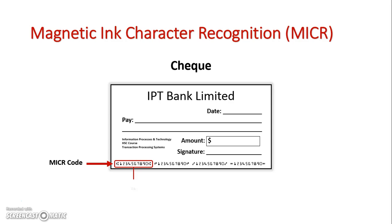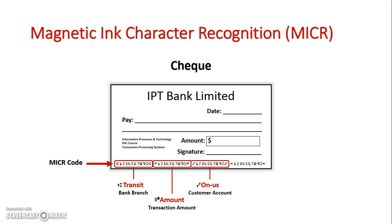The first one has its own particular symbol, and that represents transit — this explains which branch this check is from. The second area is known as amount, and it includes what the transaction amount is. The third area is known as on-us, and that's the customer account. And the fourth area is known as dash, and that relates to routing the numbers. Each of these sections is separated by these specific symbols and tells the MICR reader data about this actual document.